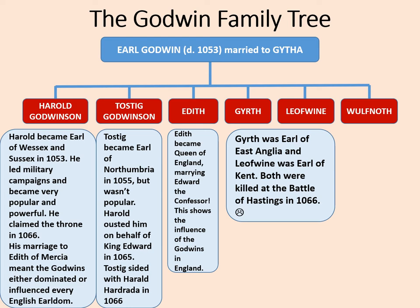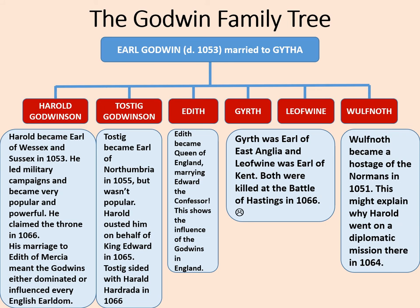What about Gith and Leofwine? Gith was Earl of East Anglia and Leofwine was Earl of Kent. Both were killed in the Battle of Hastings in 1066, along with their brother Harold. And what about Wulfnoth? Wulfnoth became a hostage to the Normans in 1051. This might explain why Harold went on a diplomatic mission there in 1064 — perhaps he was trying to rescue him, though we'll never be entirely sure.